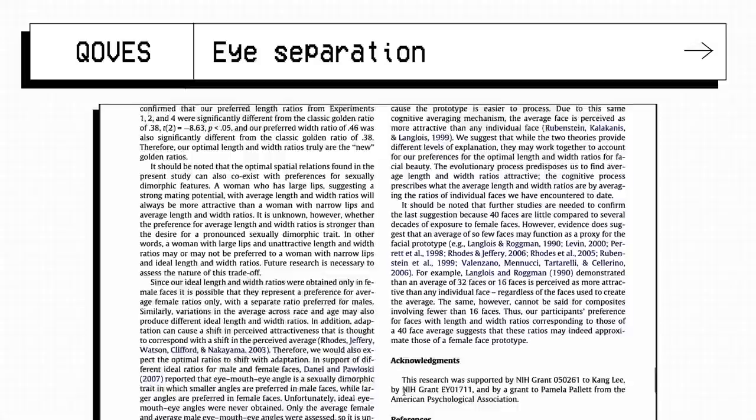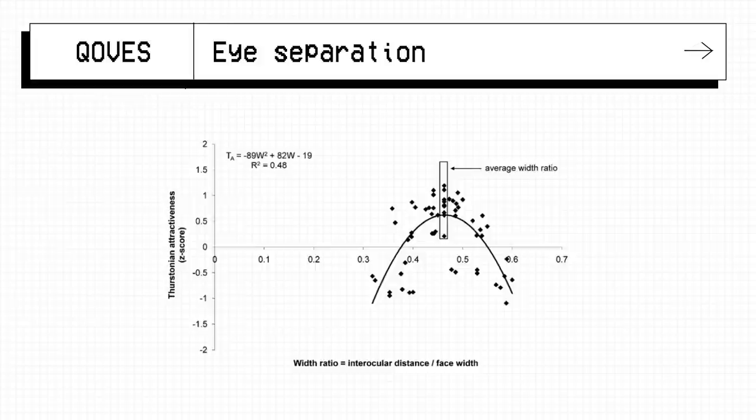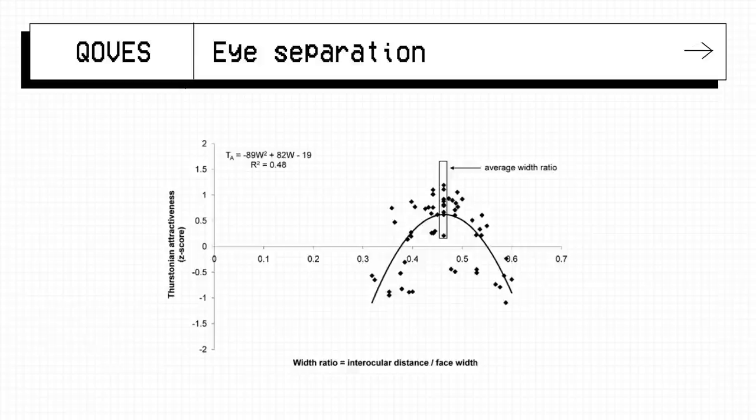Attractiveness scores followed a curvilinear function with the width ratio, meaning that too wide or too narrow set eyes are both considered lower than a range of normal values, so that 28-35mm that most of the population falls into.